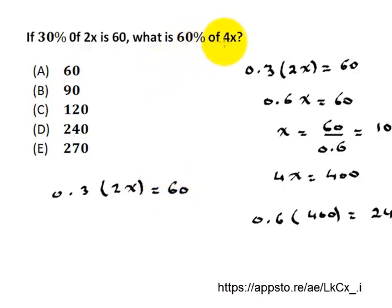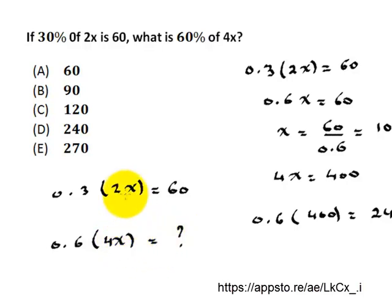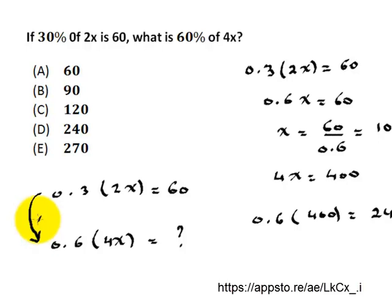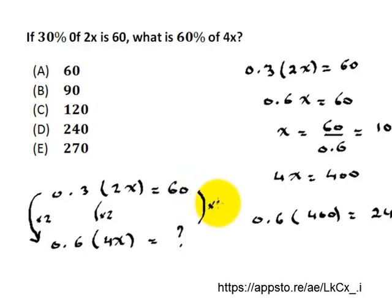Now they want you to find 60% of 4x. 60%, which is 0.6, of 4x equals what? You know that this is an equation and this is also an equation, so we can multiply anything by the left side but we must multiply the same thing by the right side. To move from the first equation to the second, look: 0.3 times 2 gives 0.6, and from 2x to 4x we also multiplied by 2 — meaning we multiplied the left side by 4. So multiplying the right side by 4 gives the answer: 60 times 4, which is 240.